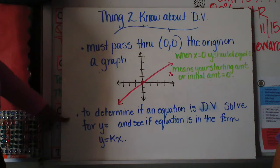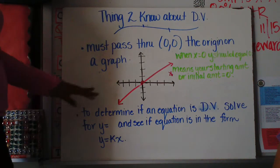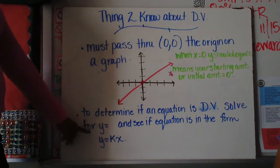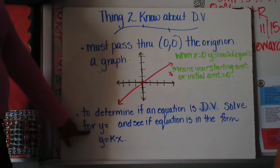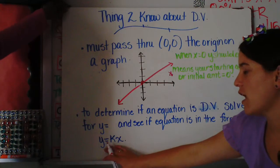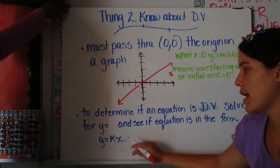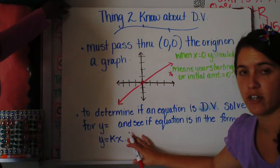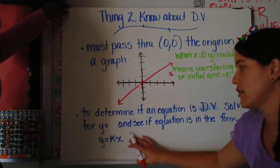To determine if an equation is in direct variation or is direct variation, we need to solve for y equals, and the equation must be in the form y equals kx. So this means that if you have something with a plus or a minus out here, then that is not going to be a direct variation if it has a plus or a minus out there.